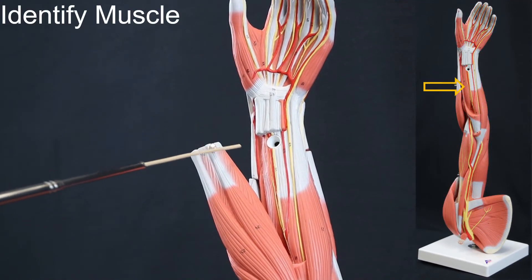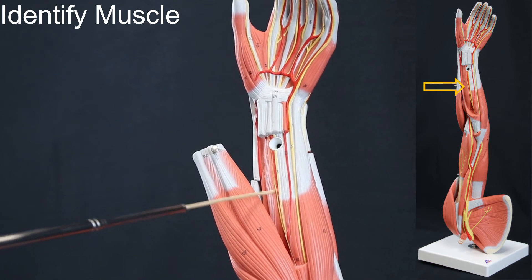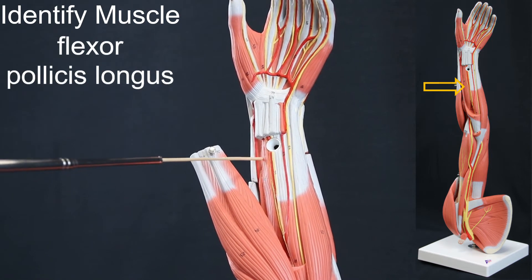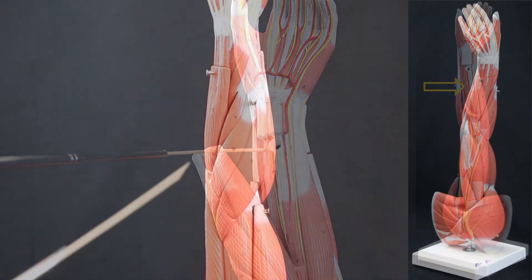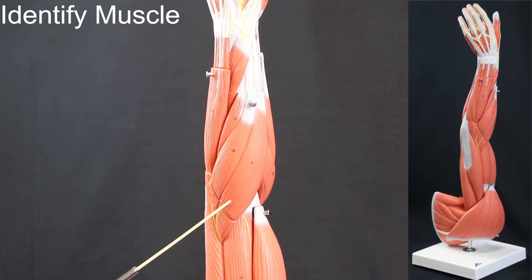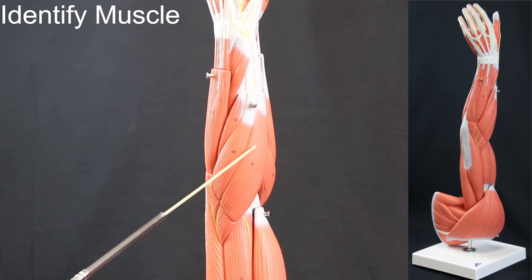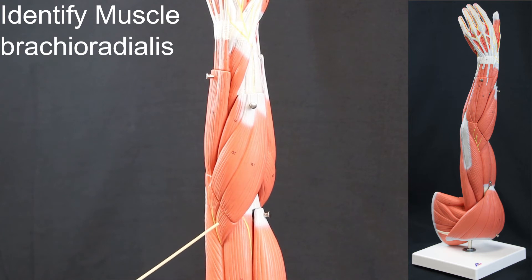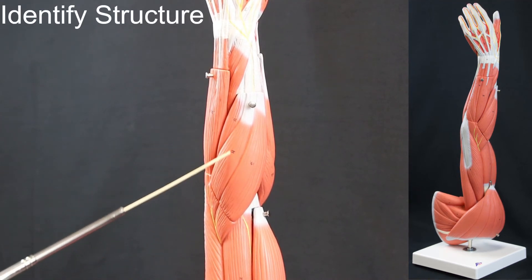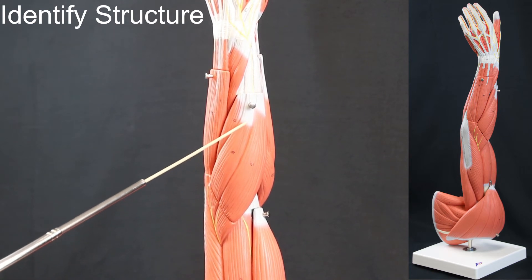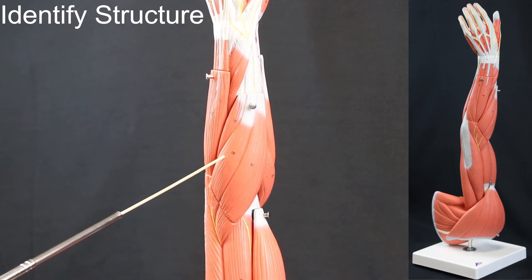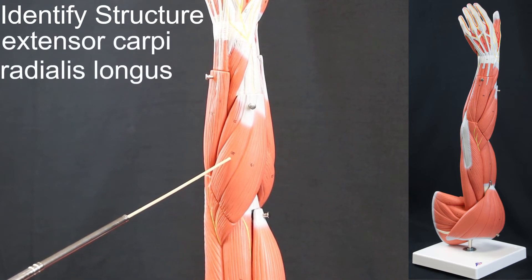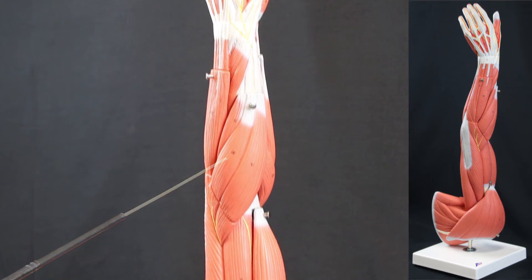I.D. muscle: flexor pollicis longus. I.D. muscle: brachioradialis. I.D. muscle: extensor carpi radialis longus.